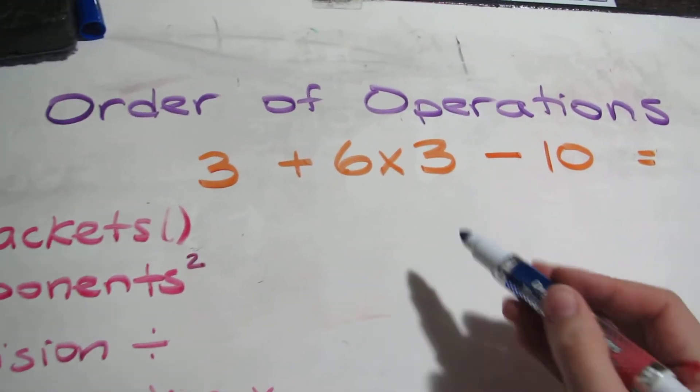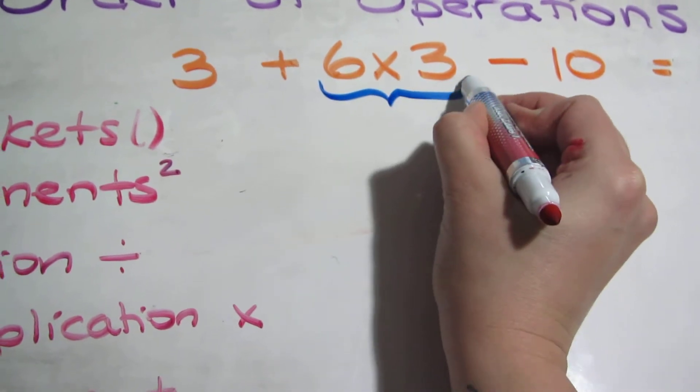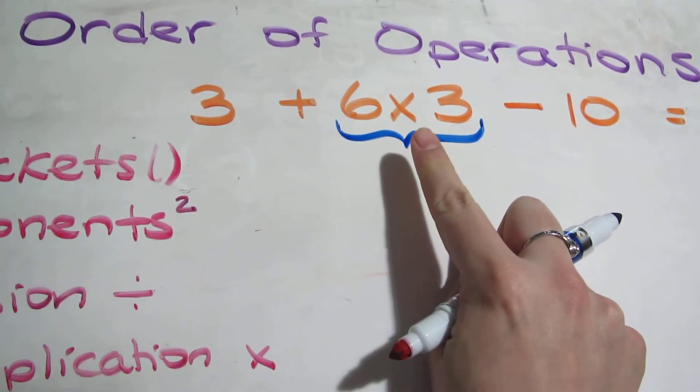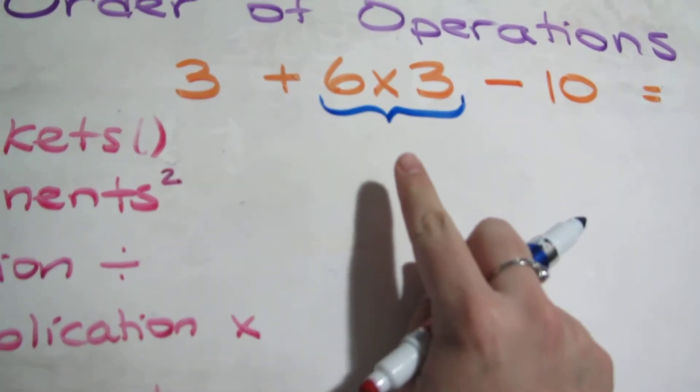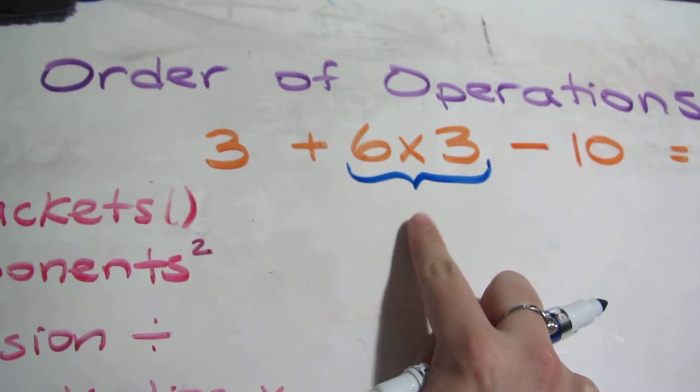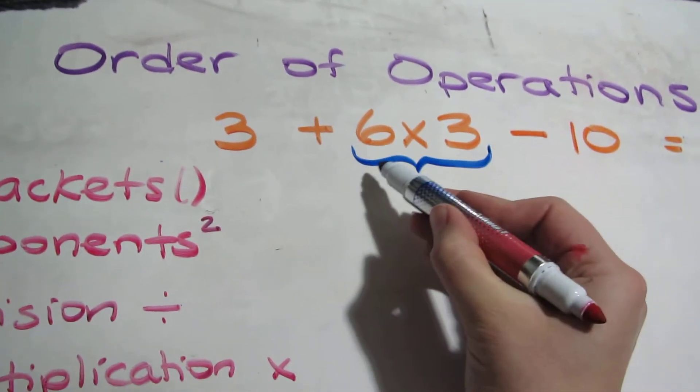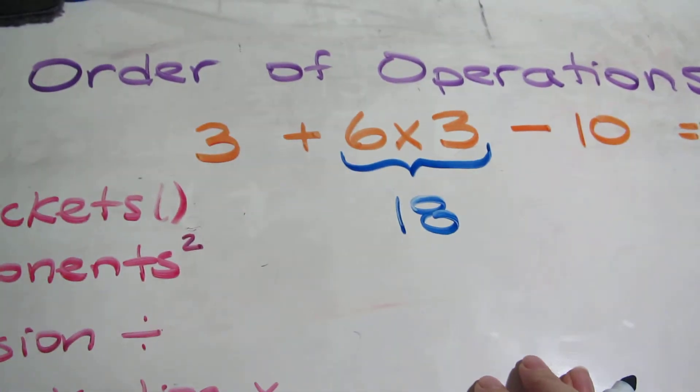This is very important. We're going to select the equation that we're working with because we don't want to get mixed up with the other numbers right now. We only want to select what we're using and bring this number down. So we have 6×3, which is 18.